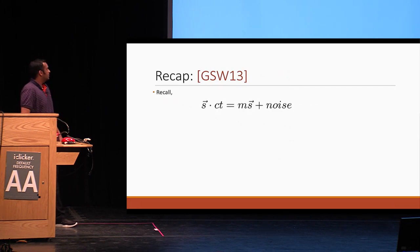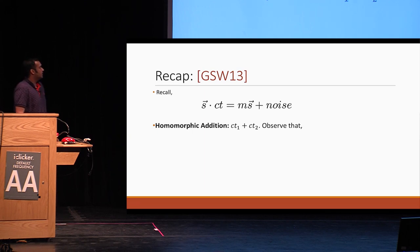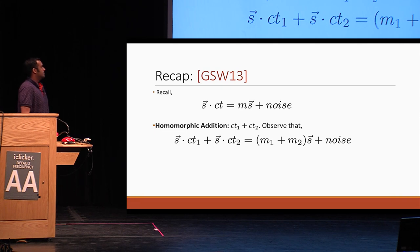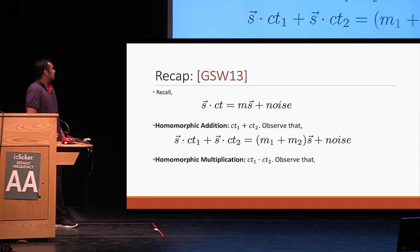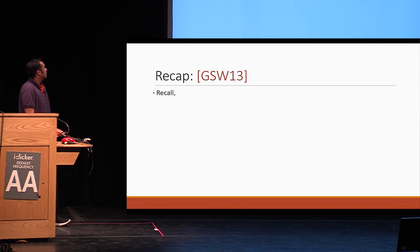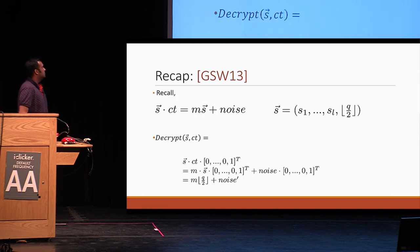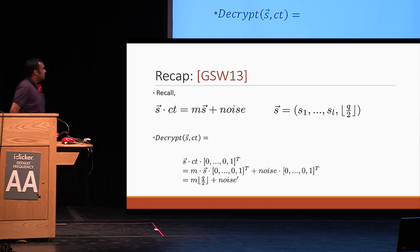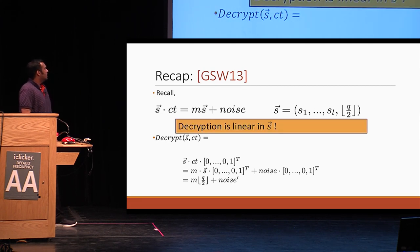When you compute CT1 plus CT2 and multiply by S, what you get is (M1 plus M2) times S plus noise. So CT1 plus CT2 is a nice homomorphic addition. Similarly, if you multiply CT1 times CT2, you observe that S times CT1 times CT2 equals M1 times M2 times S plus noise, giving homomorphic multiplication. This way we can define decryption as S times CT times the public vector [0,0,1]^T. When you compute this, you get M times Q/2 plus noise. Note that decryption is linear in S.